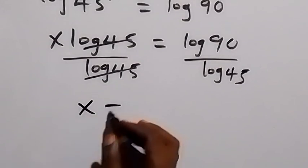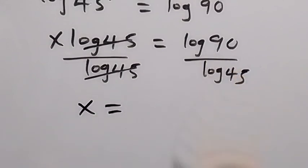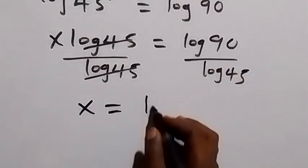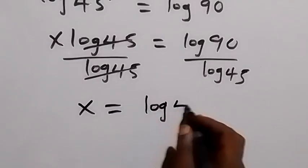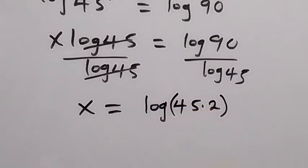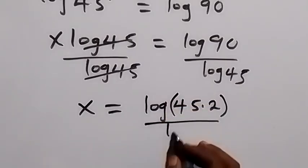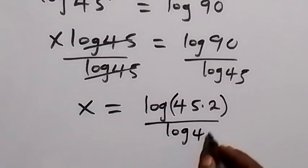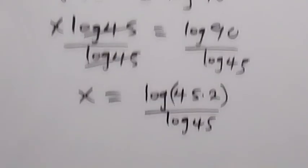We have x equals... here we can separate log 90. This can be written as log of 45 times 2, since 45 times 2 is 90, divided by log 45. We can simplify this further.